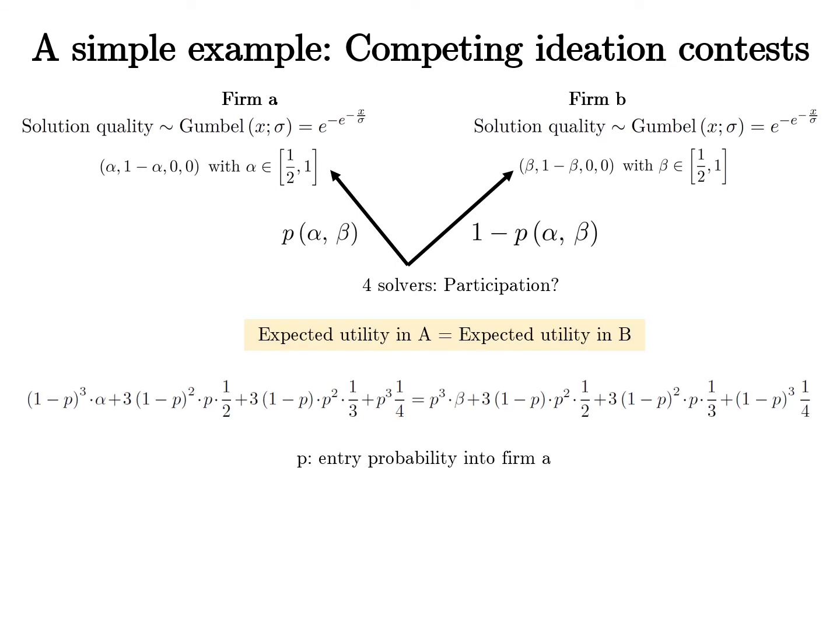Since a solver's solution quality is not affected by effort, in equilibrium each solver enters contest A or contest B with probability P and one minus P respectively, so that the expected utilities from the two contests are equal. Conditional on all other solvers not being in contest A, a solver who enters gets the top prize alpha. Since solvers enter contests independently with the same probability, the probability that the three others are absent is simply (1-P) cubed, and so on for other events.